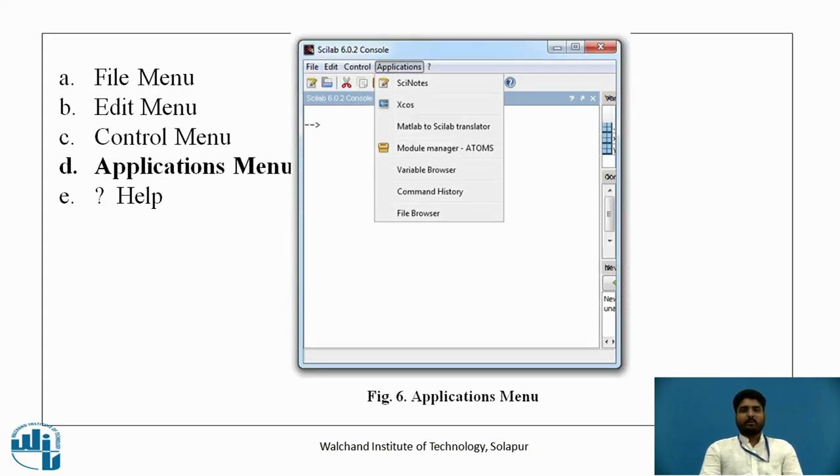Application menu. In application menu, the most important thing is we use SciNotes. In SciNotes, it is just like a notepad. We use SciNotes and we write a program on that SciNotes and we execute it in a console window. In the coming videos, we are going to see how to use SciNotes and how to write a program on SciNotes. SciNotes is basically used to write a program on that SciNotes and execute on a console window.